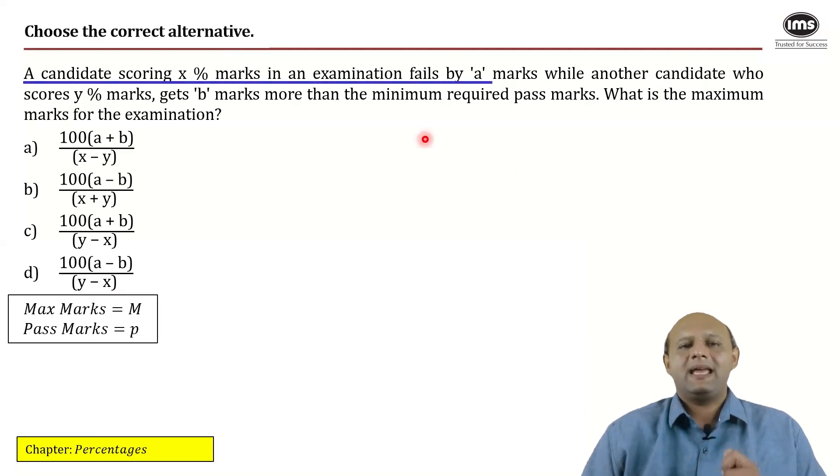A candidate scoring X percent marks in an exam is failing by A marks. So how would the equation turn out to be? X percent of the maximum marks would be equal to P, which is the passing marks, minus A because he is failing.